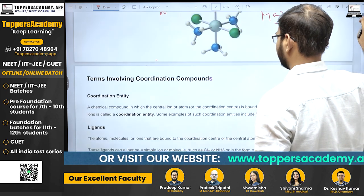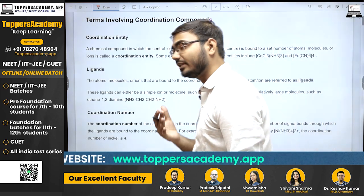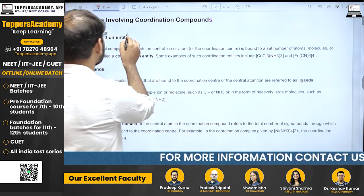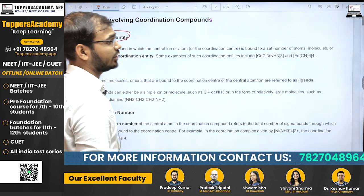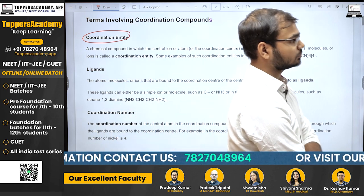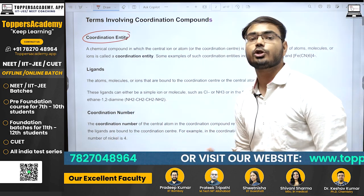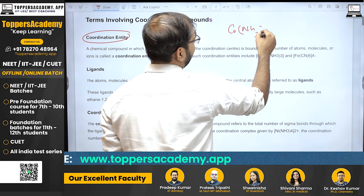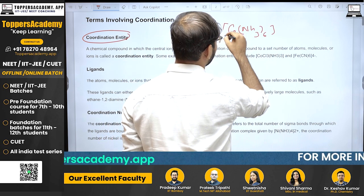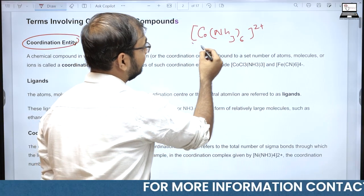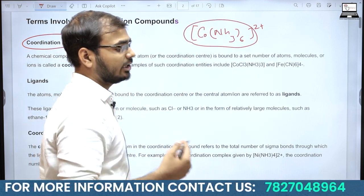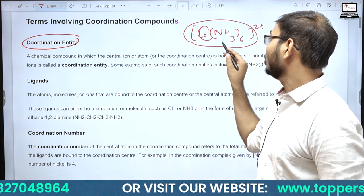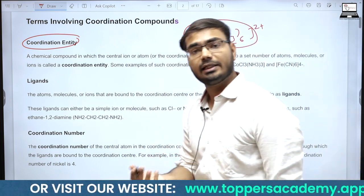अब coordination compound पढ़ते समय कुछ important terms को जानना ज़रूरी है। पहली term है Coordination Entity — यह आपको coordination compound के constituents के बारे बताती है। Example के तौर पर [Co(NH3)6]2+ में यह पूरा part coordination entity है। यह बताता है कि central atom cobalt है और उसमें 6 amine ligands मौजूद हैं।